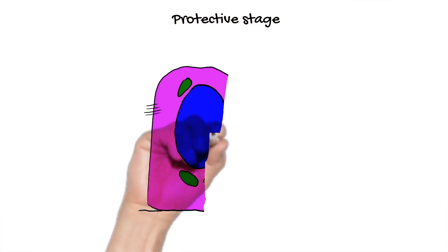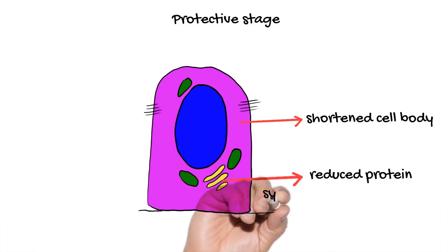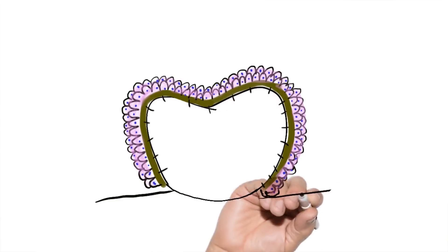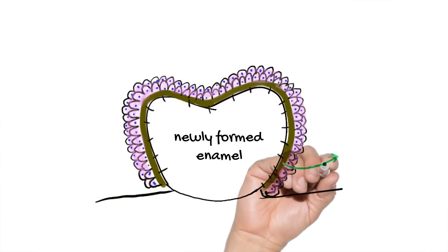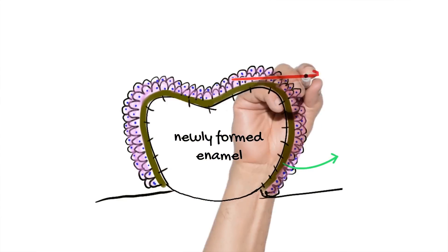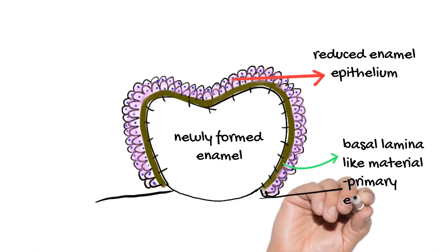Once the enamel gets completely matured, the newly formed enamel is protected by the same cells that formed it. In the protective stage, ameloblasts undergo a drastic reduction in height and number, and later combine with the stratum intermedium and outer enamel epithelial cells to form the reduced enamel epithelium. These combined cellular layers secrete a basal lamina-like material that adheres firmly to the newly formed enamel and protects the tooth until eruption — this is called the primary enamel cuticle.